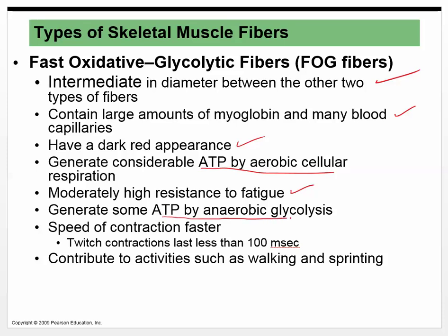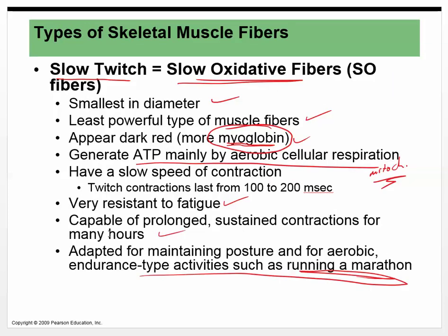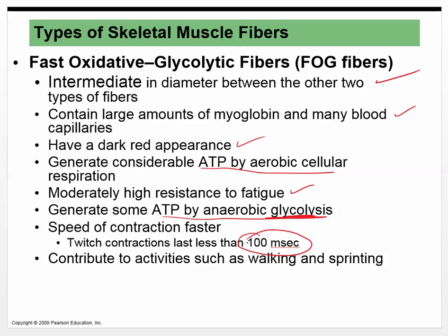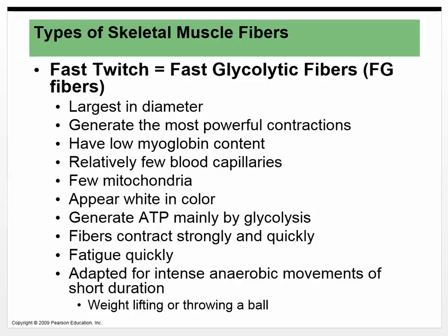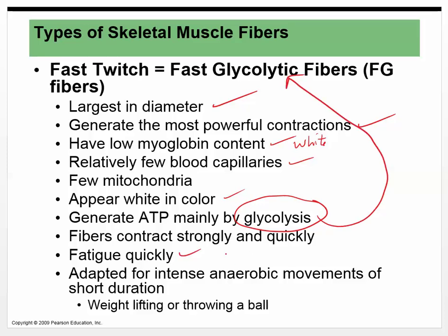Slow oxidative fibers have a twitch contraction lasting 100 to 200 milliseconds, are very resistant to fatigue, and are capable of prolonged sustained contractions for many hours — like a chicken walking or running a marathon. They're adapted for maintaining posture and aerobic endurance activities. Fast oxidative glycolytic fibers are intermediate — they have a lot of myoglobin and blood capillaries, generate considerable ATP by aerobic respiration, but also generate some ATP by anaerobic glycolysis, making them only moderately resistant to fatigue, with contraction speeds around 100 milliseconds. Fast glycolytic fibers are largest in diameter, most powerful, almost no myoglobin, white in color, fewer capillaries and mitochondria, generate ATP mainly by glycolysis, and fatigue quickly — adapted for intense anaerobic movements of short duration like weightlifting or throwing a ball.